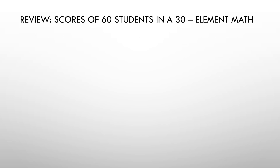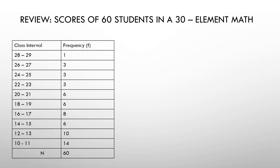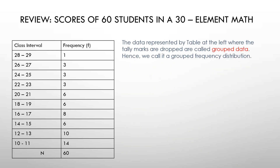Let's review the scores of 60 students in a 30-element math class. We have a class interval with their frequency. The data represented in the table where the tallmarks are grouped are called group data, so this is a grouped frequency distribution.